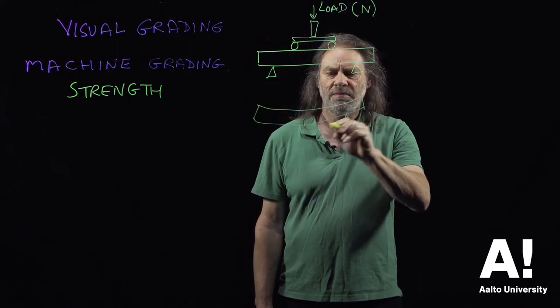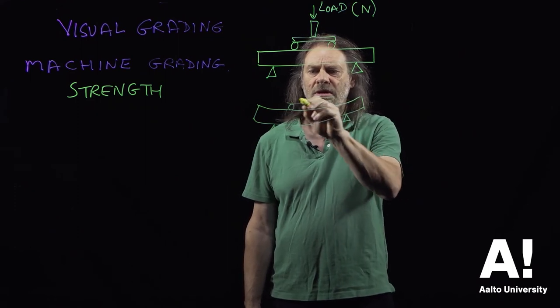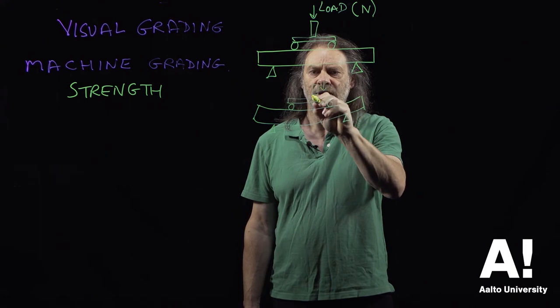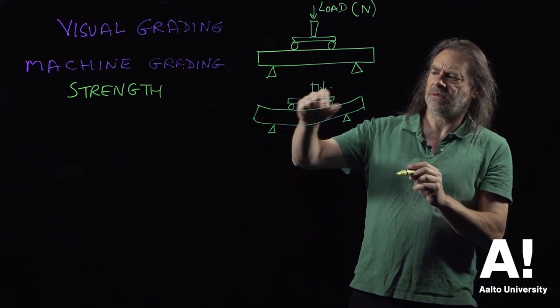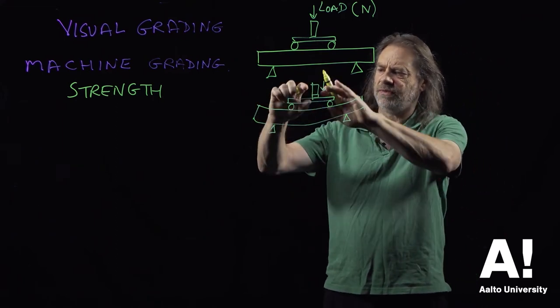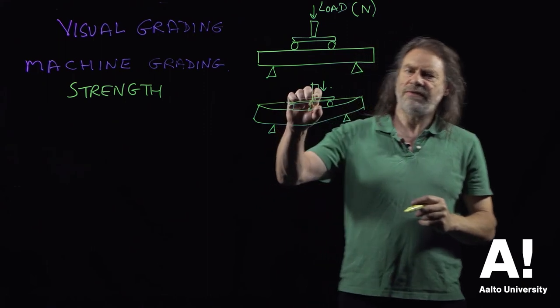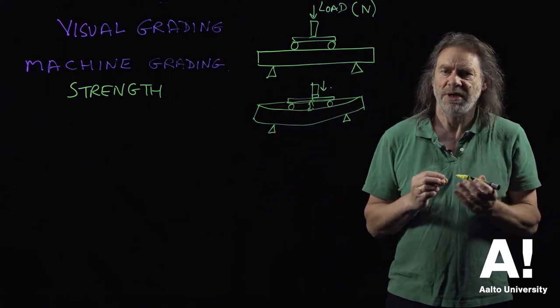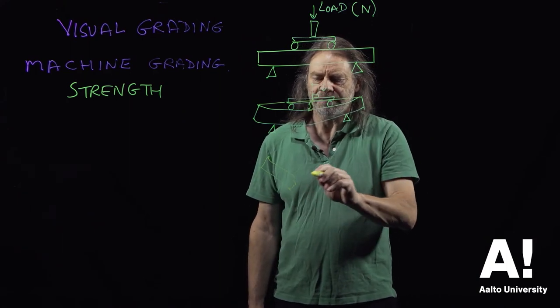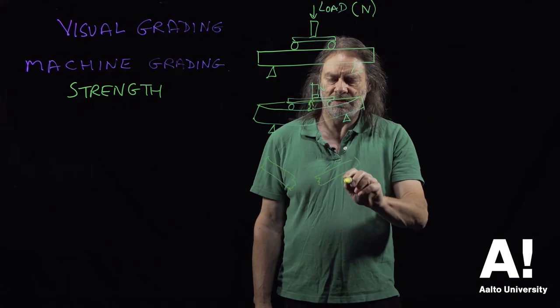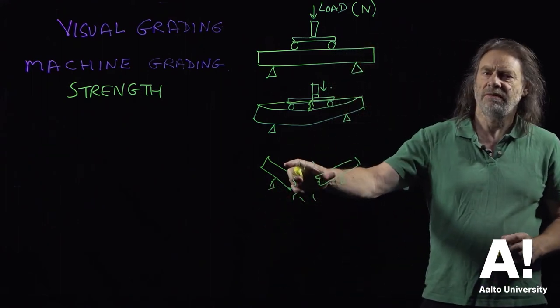The amount by which it deforms gives us a property called stiffness. So we've applied a load and this beam is deformed. That deflection from the straight beam—that deflection is related to how stiff the beam is. And eventually, if we keep applying a load, that beam will fail, so the property that we're interested in is the strength of that beam.